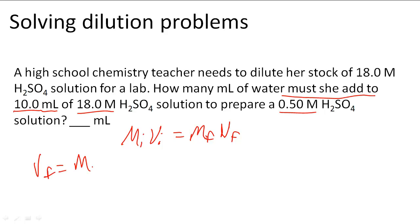we do M initial times V initial divided by M final. So we're going to put 18 molar times 10.0 milliliters over 0.50 molar.